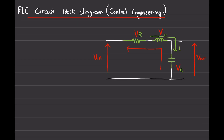Now in order to draw the block diagram, first of all we have to find out a few terms from this diagram: VT which is our total voltage, VR which is the voltage drop across the resistor, the voltage drop across the capacitor, and the voltage drop across the inductor. To draw the block diagram we're going to find out the equations for each of these terms one by one.